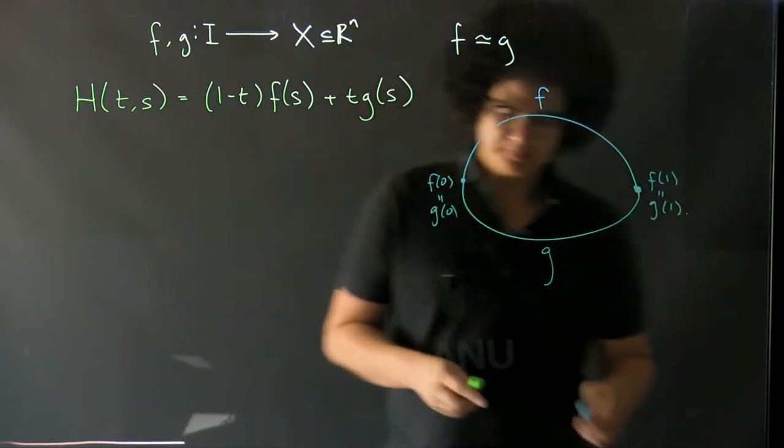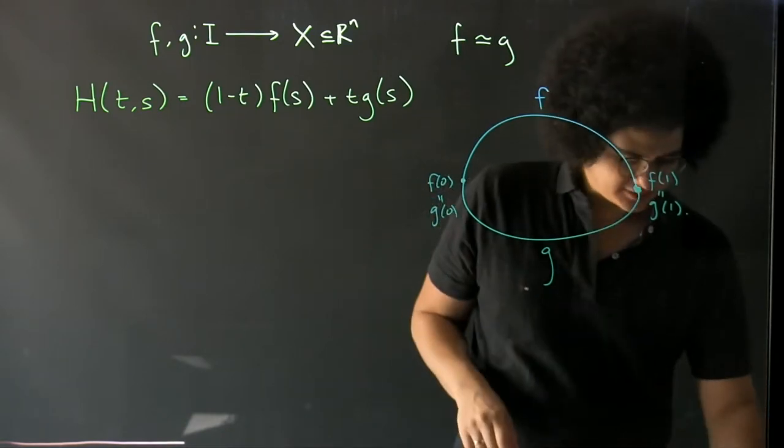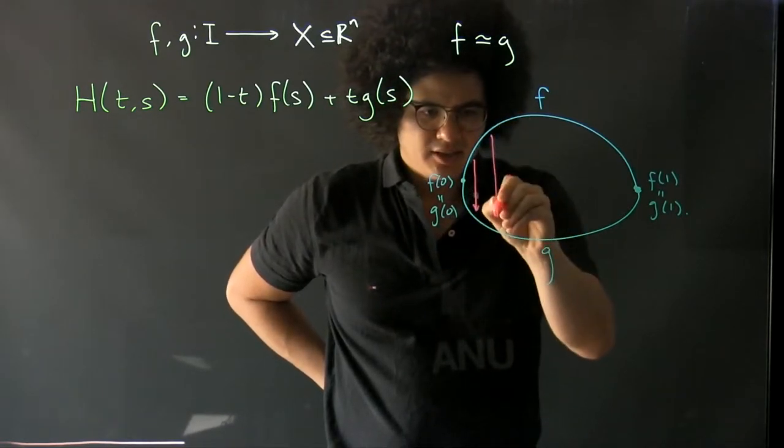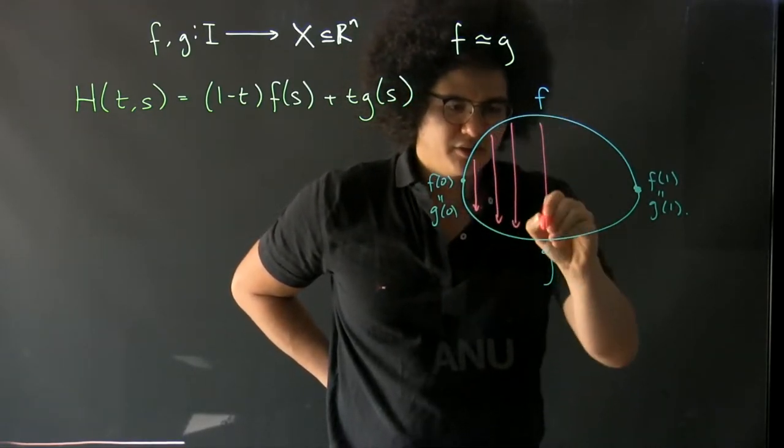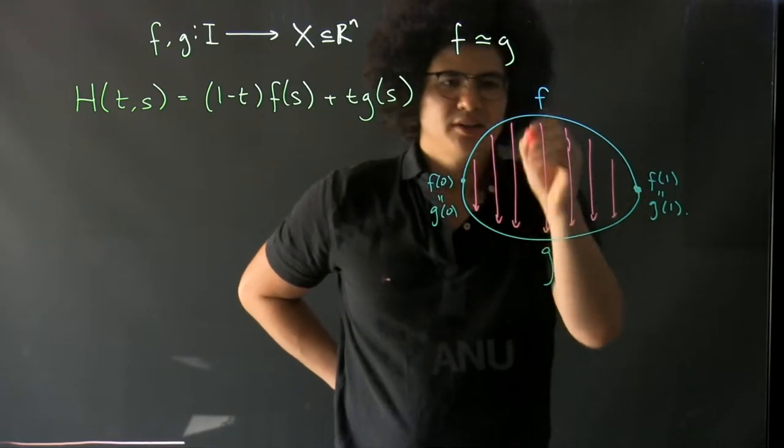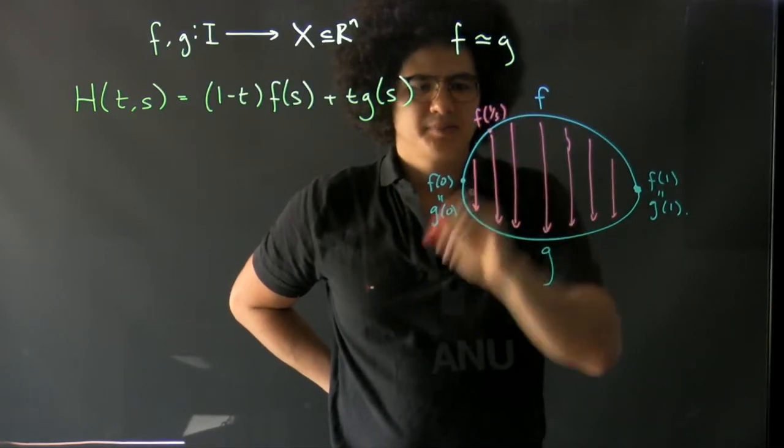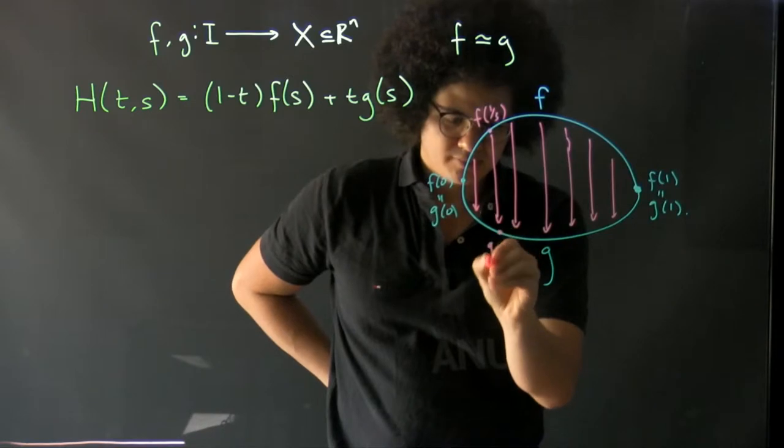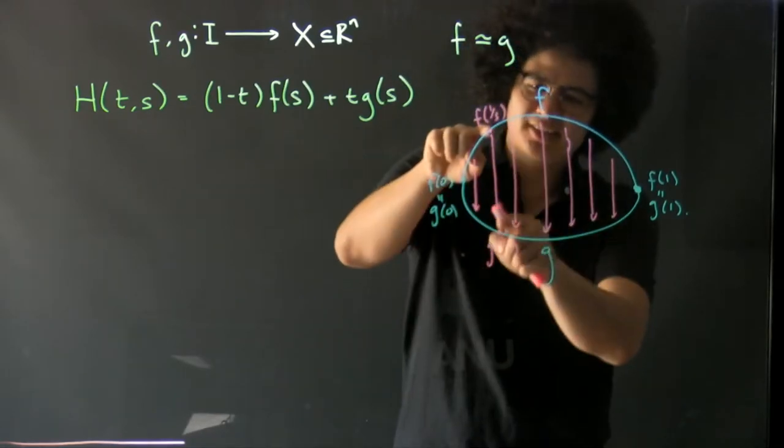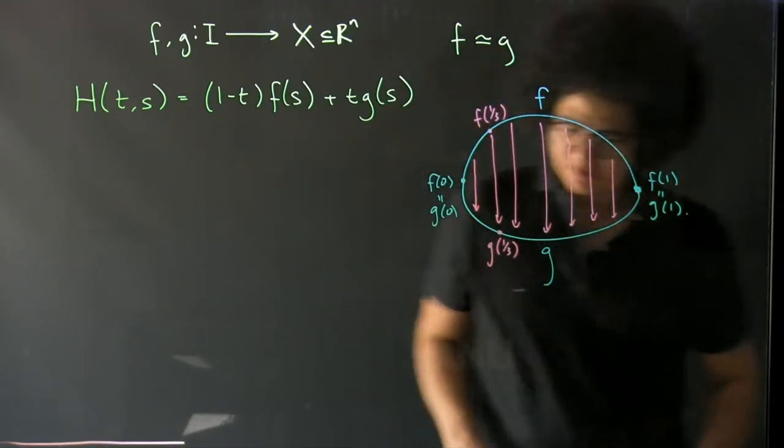We can ask for a homotopy here, and if this is in R^n then this homotopy is the thing that sends each element at each point in the path down to the corresponding point in g. So this point here, f of a third, sends to g of a third, and it sends it at a constant speed. Whatever the distance between these two points is, it just traverses that distance in time one.